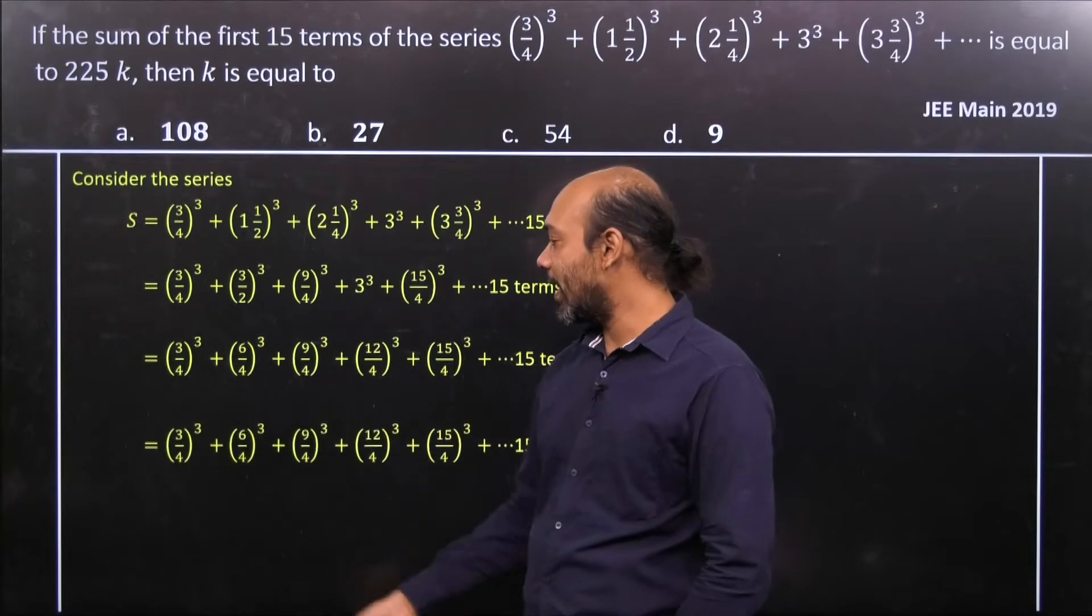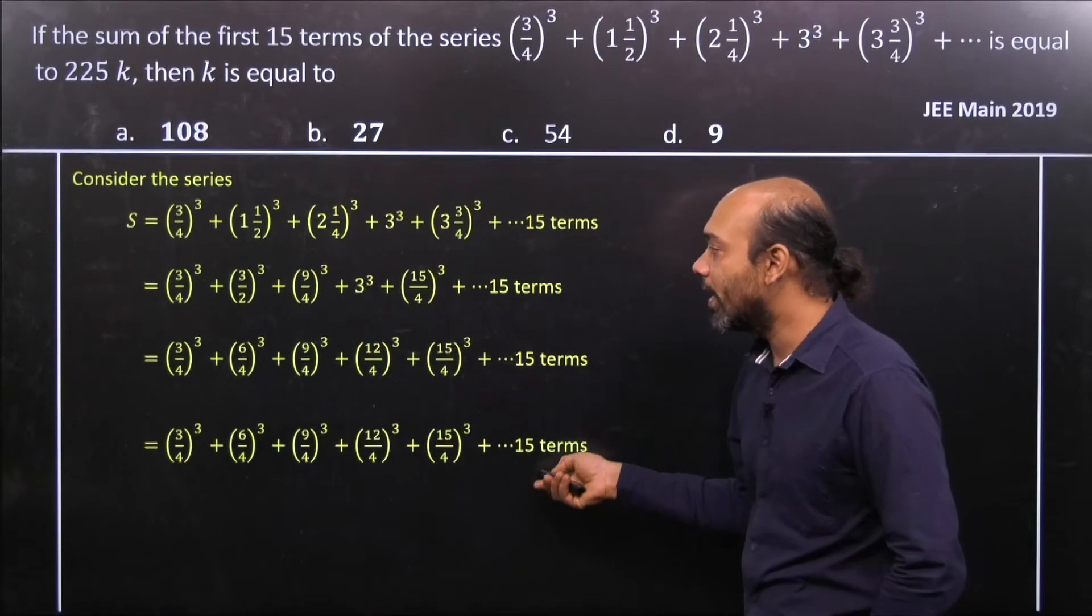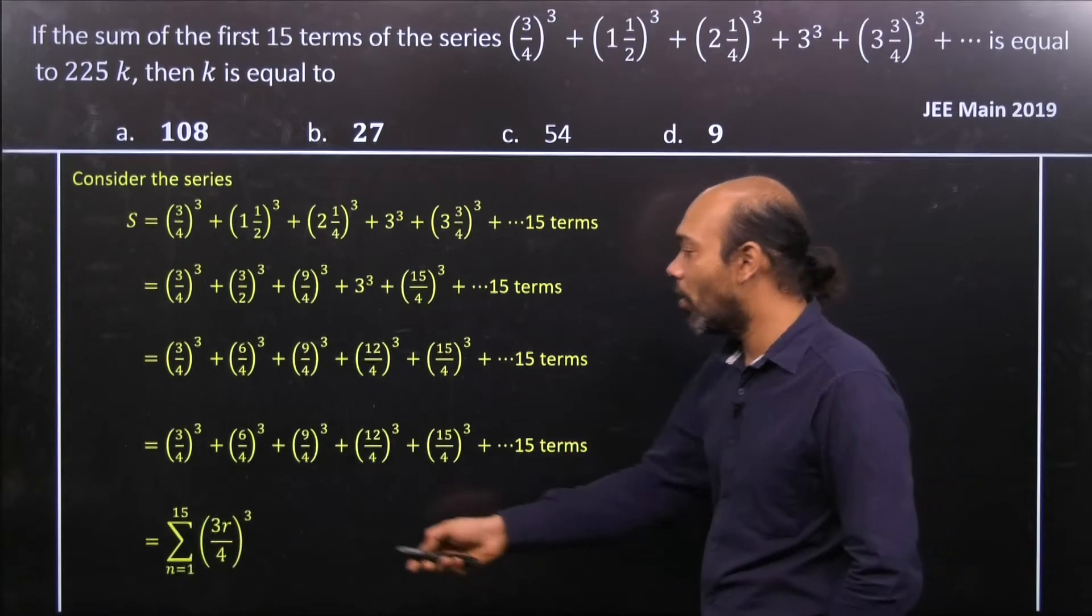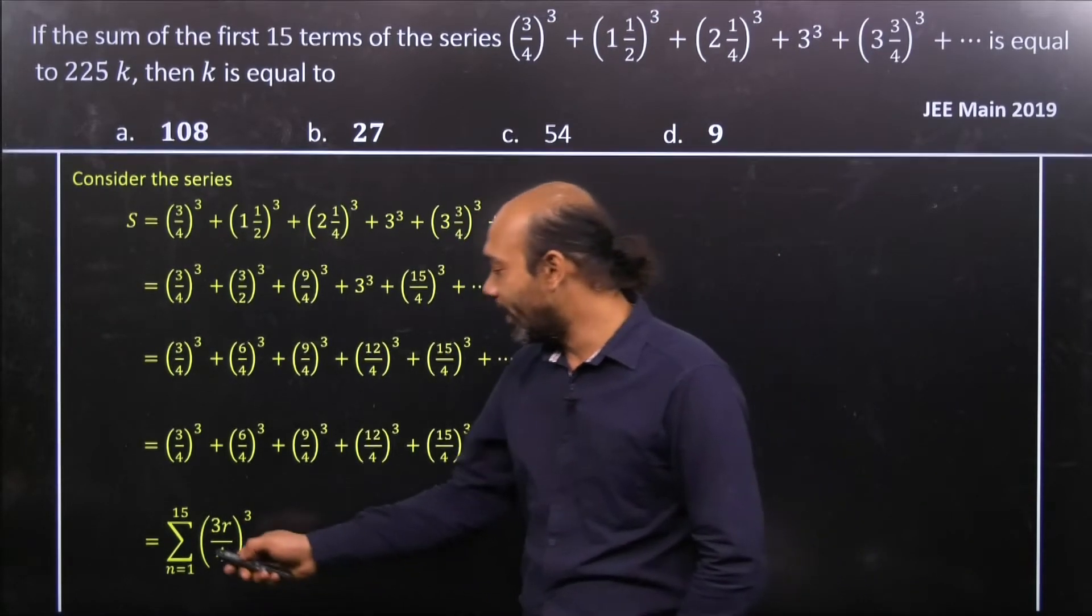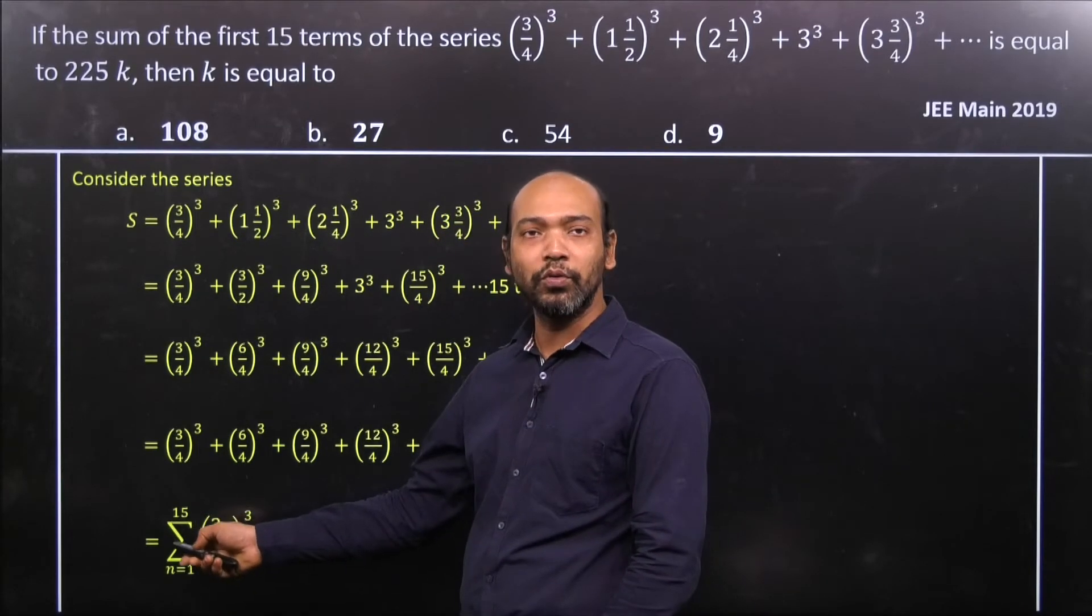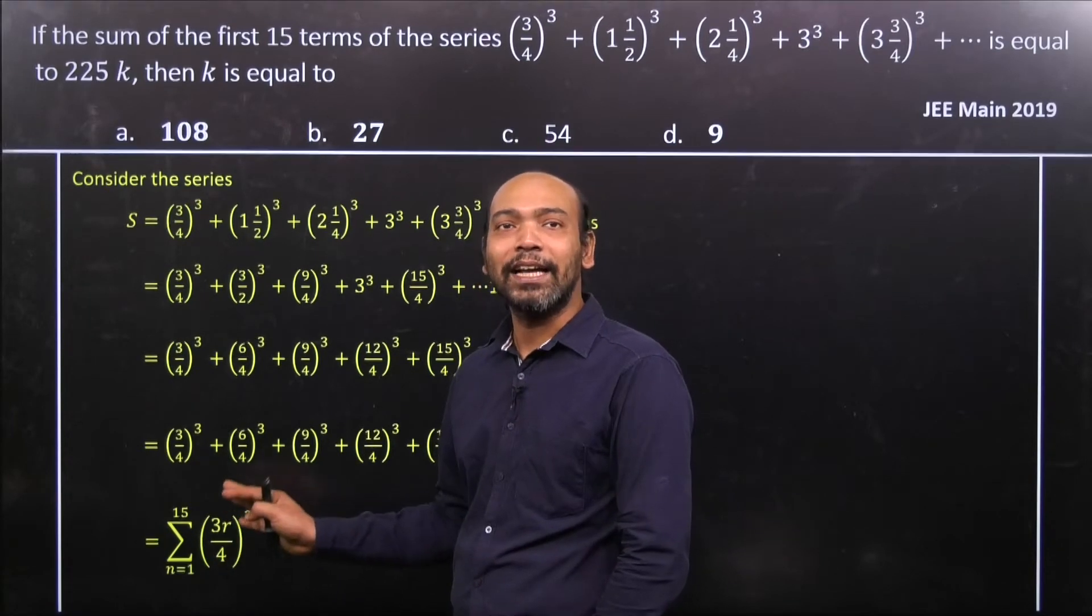As the 15 terms, then here we can understand that r term can be written as (3r/4)³. So here we can easily see the sum is actually summation n equal to 1 to 15 of (3r/4)³.